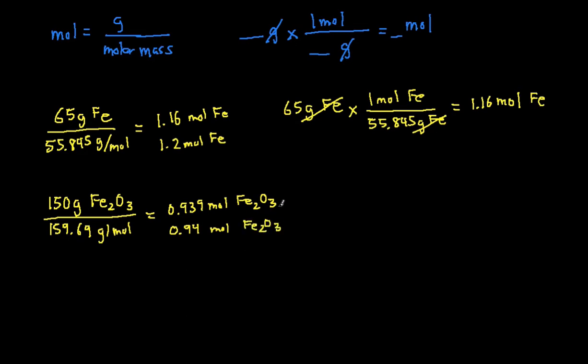Now let's do the same thing but with dimensional analysis this time. We'll start with 150 grams of the iron oxide. Then we're going to multiply on the top. It's always going to be one mole of that compound or element, iron oxide.